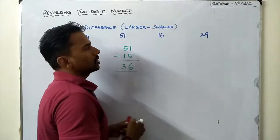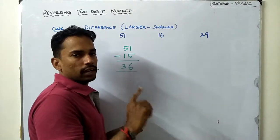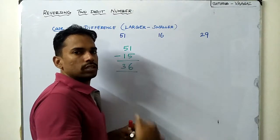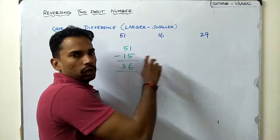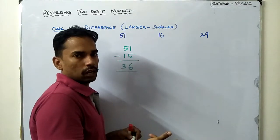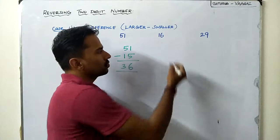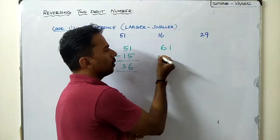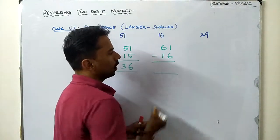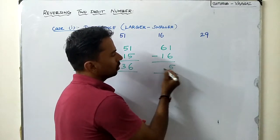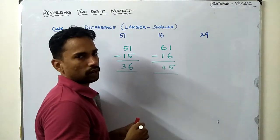Next is 16. If we reverse 16, we get 61. This time, 61 is the bigger number and 16 is the smaller number. So we do 61 minus 16, and we get 5 in the tens and 4 in the ones. The answer is 45.